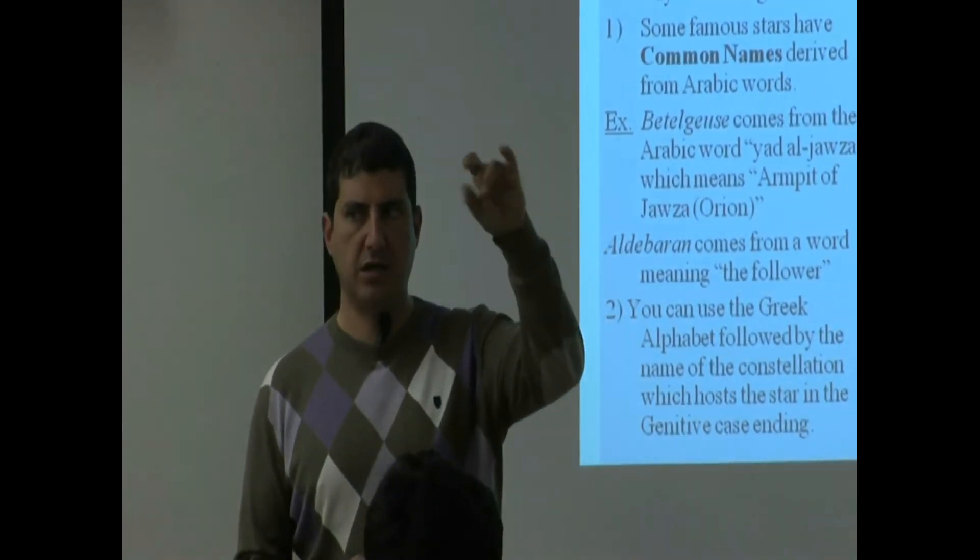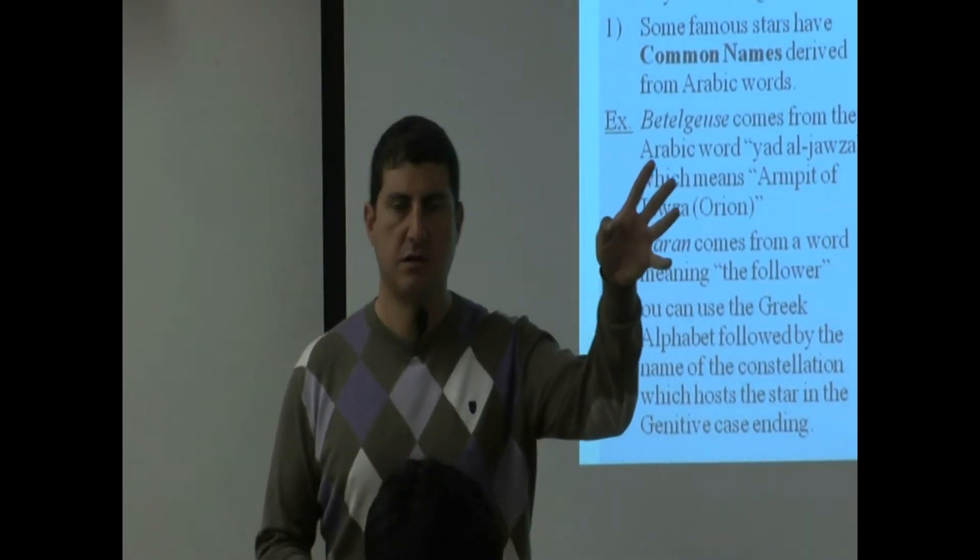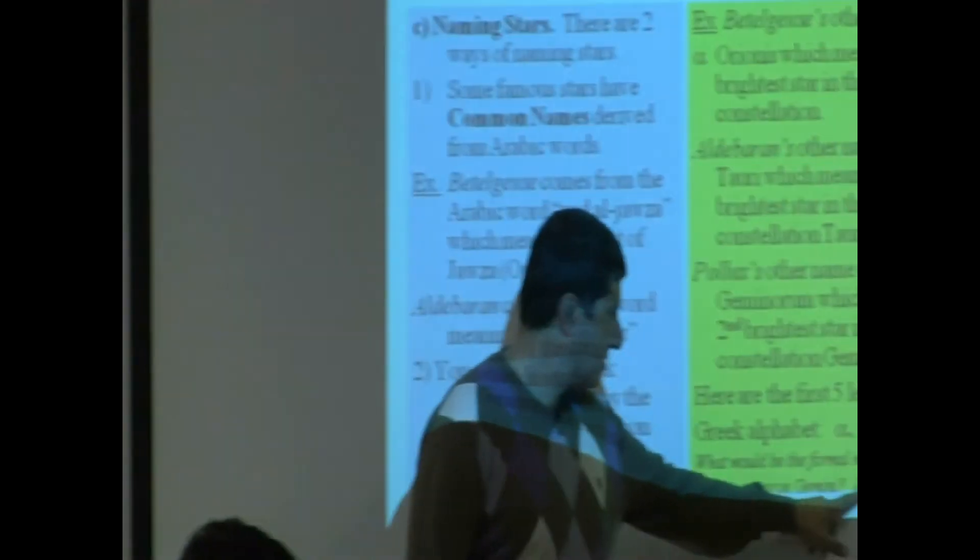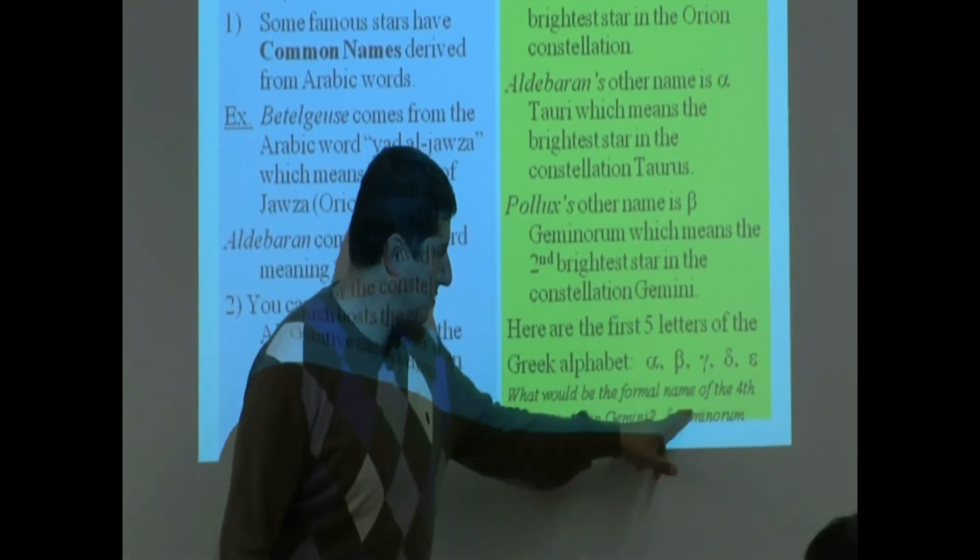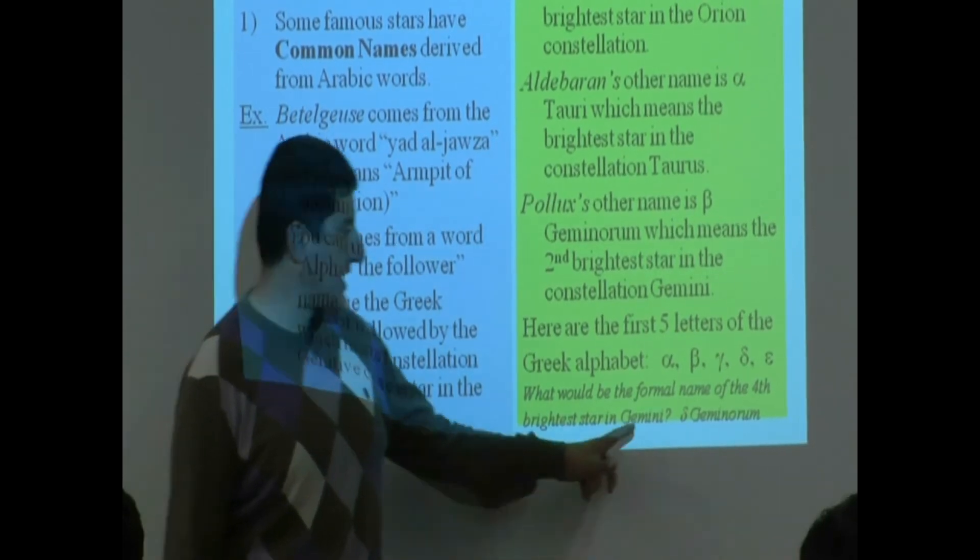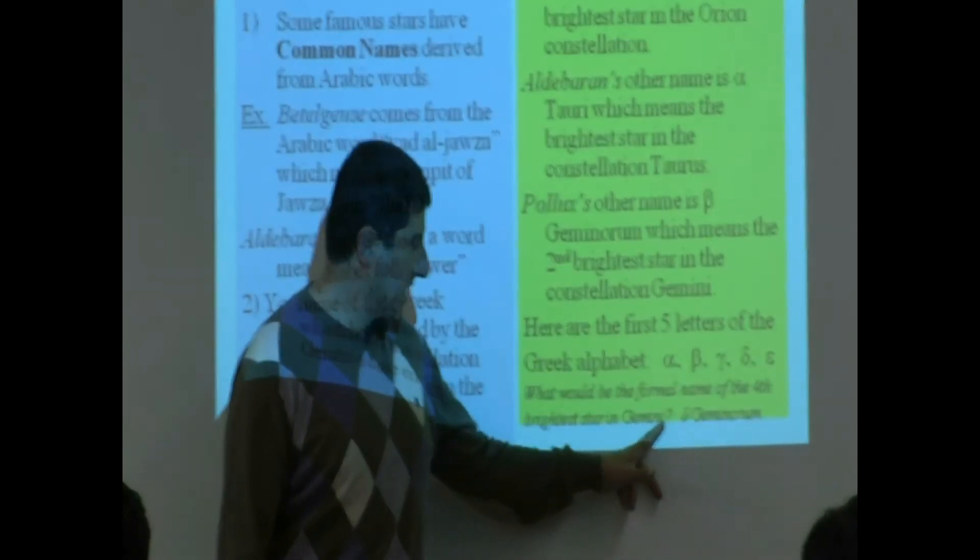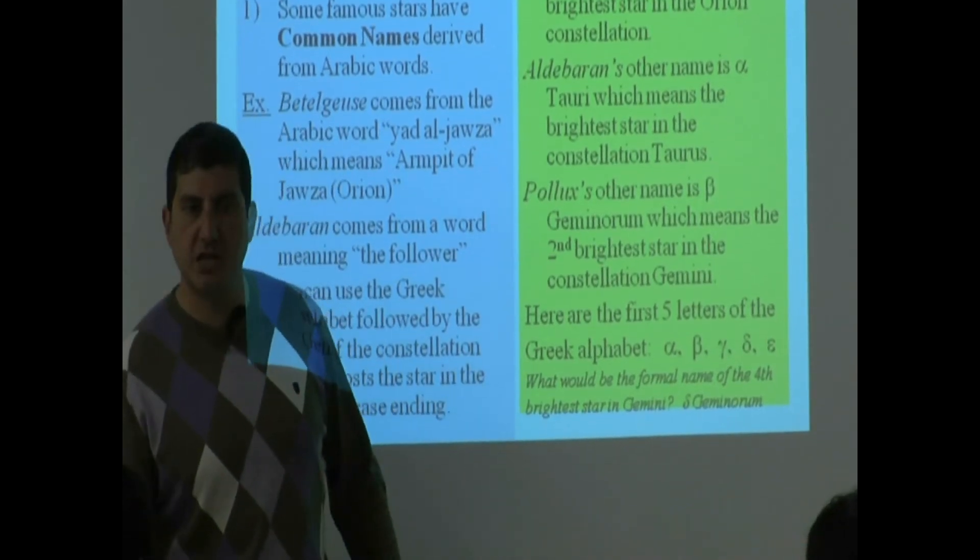A, B, C, D, E—so the D is the fourth letter, right? So Delta is the fourth letter, okay? And then what else would you have to know? Gemini, the genitive case is what? Geminorum.